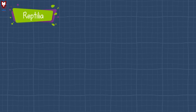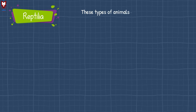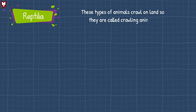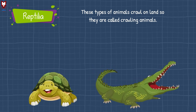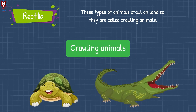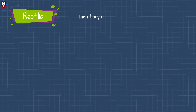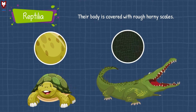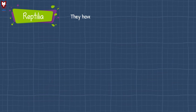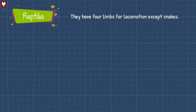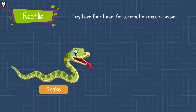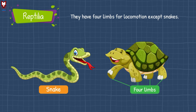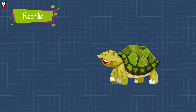The next class is Reptilia. These types of animals crawl on land, so they are called crawling animals. Their body is covered with rough horny scales. They have four pairs of limbs for locomotion, except snakes. Locomotion means movement.